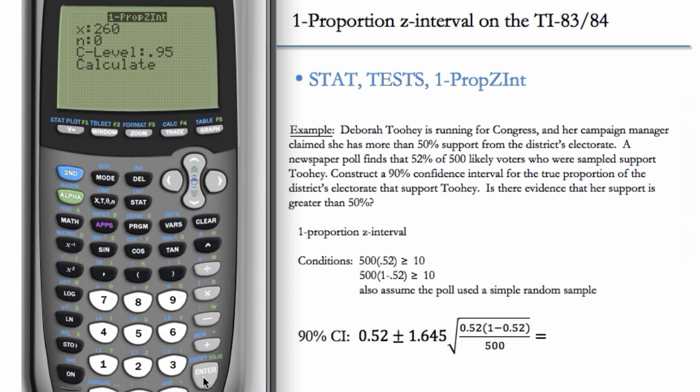X has to be an integer. So if you do this product on the calculator and it doesn't come out to an integer, make sure you round it to the nearest integer or you're going to get a syntax error.